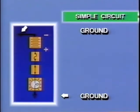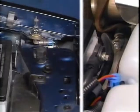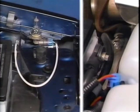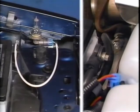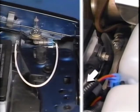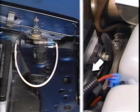When electricity passes through this load, the filament gets hot enough to produce light. After operating the load, electricity goes back to the battery via this ground. The ground makes an electrical connection to the conductive body sheet metal, frame, or engine block metal. Another ground at the battery completes the circuit.